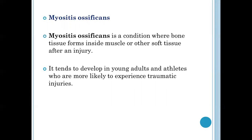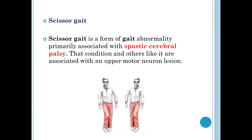The next question was about myositis ossificans. Myositis ossificans is a condition where bone tissue forms inside the muscle or other soft tissue after an injury. It tends to develop in young adults and athletes who are more likely to experience traumatic injuries.